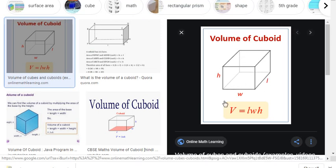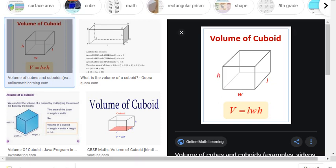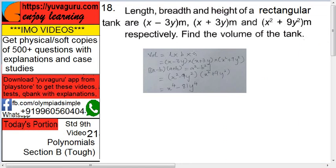This is a cuboid, so length into breadth into height - just multiply these things. Volume equals l into b into h. What is l? x minus 3y. b is x plus 3y, into h which is x square plus 9y square.